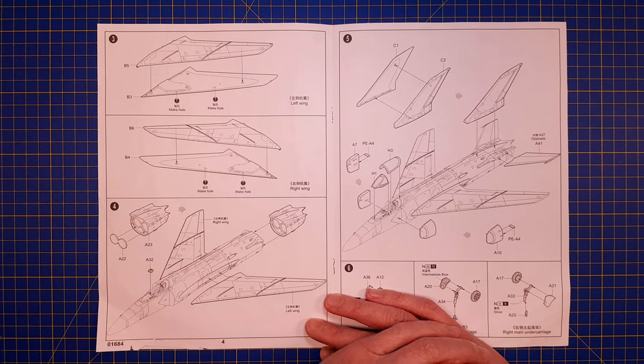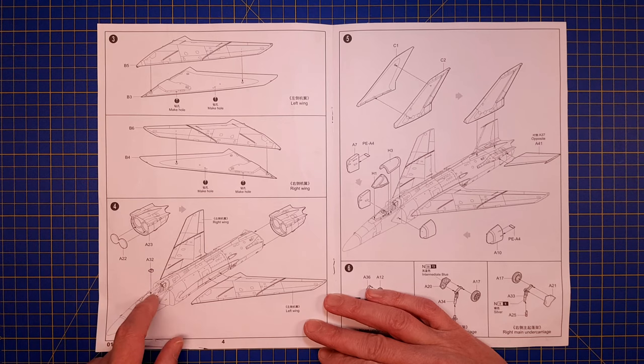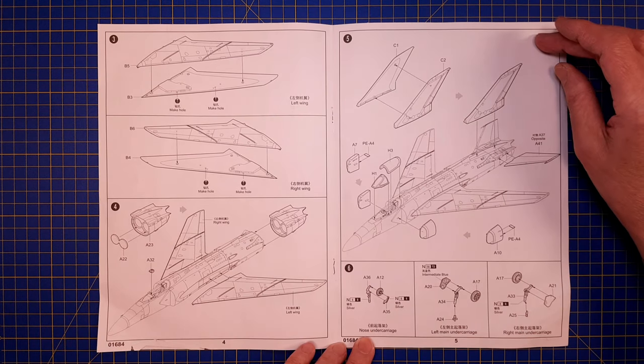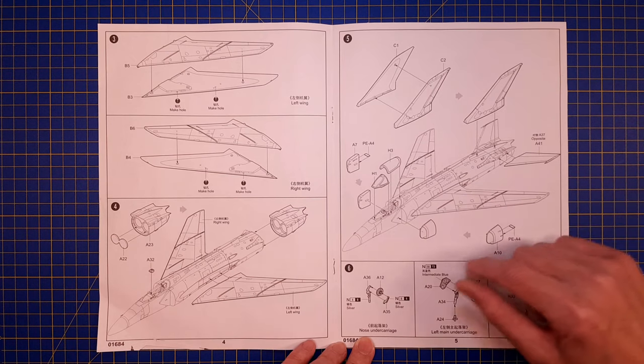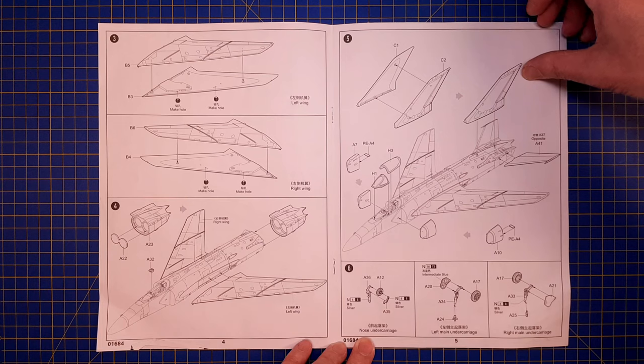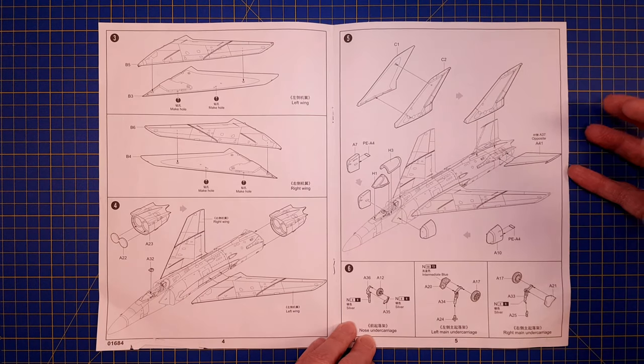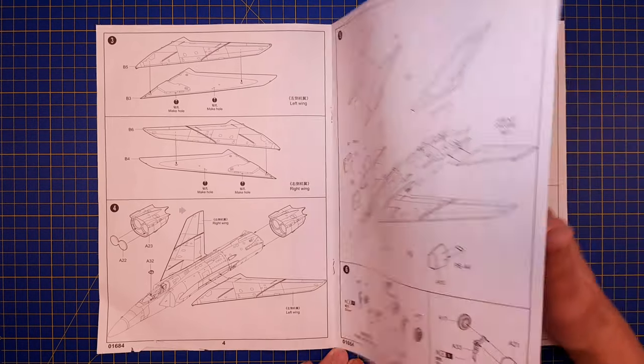We are basically assembling the whole aircraft at step number five, and after that we move into the small parts like the undercarriage, wing fences, and antennas.